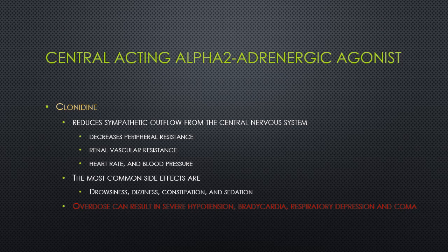An overdose of clonidine can result in severe hypertension initially and then hypotension, bradycardia, respiratory depression, and coma. Interestingly, because of the way clonidine works within the central nervous system by stimulating the mu receptors, the respiratory depression caused by clonidine is actually responsive to naloxone or Narcan therapy to reverse the respiratory depression.